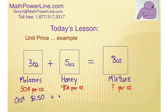We're going to add that to the cost of the honey. And so that's 40 cents times five. That'd be $2.00. And, of course, the mixture then would be a total cost of $3.50.